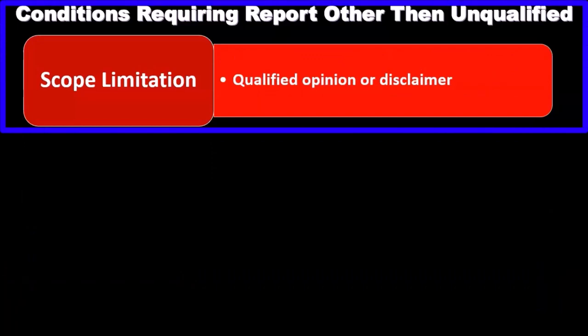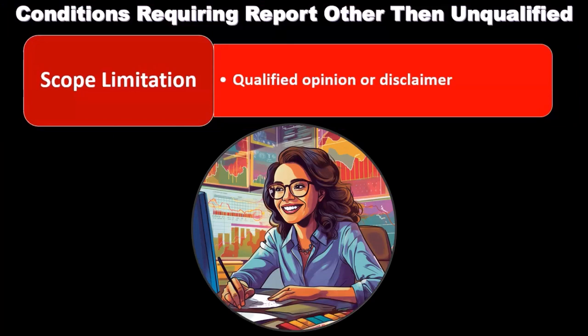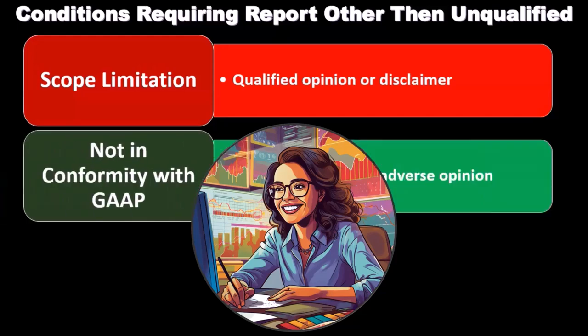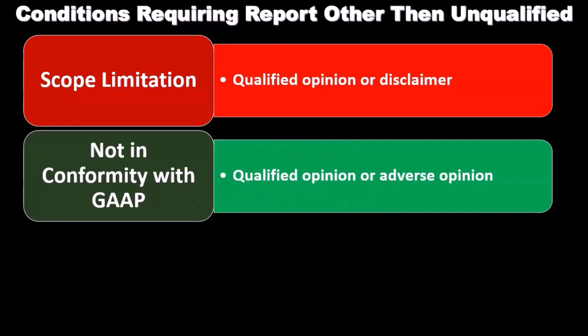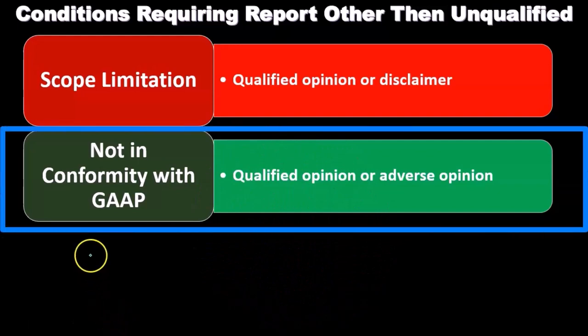If there's a scope limitation, we'd have a qualified opinion or a disclaimer of opinion. If it's just one piece we couldn't audit, we'd issue a qualification noting that limitation to the reader. However, if it's a very significant piece, we'd have to issue a disclaimer of opinion given the scope limitation.